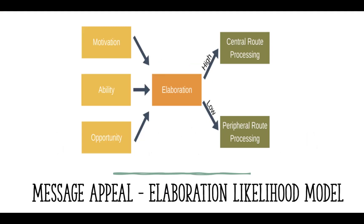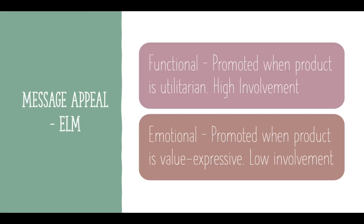So when do you use which appeal? There is a message appeal model called the Elaboration Likelihood Model, or ELM. Basically, you take motivation, ability, and opportunity, elaborate on all of those things in relation to your product, and then you have two options. You can go the central processing route — high involvement — where consumers have to really think about the product and what they can use it for. Or you have the peripheral route — low involvement — meaning it's instantaneous or impromptu. You didn't really think you were going to buy something, but you did anyway because you were influenced. Functional appeal promotes the product and is utilitarian — high involvement, requiring critical thinking. Emotional appeal is value-expressive — low involvement — you just want it.